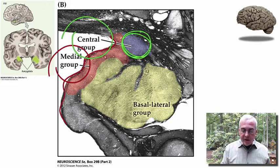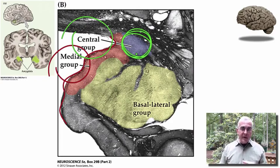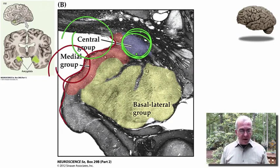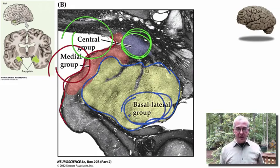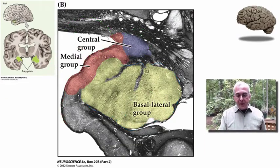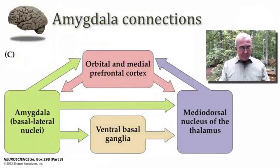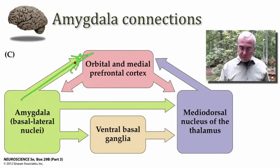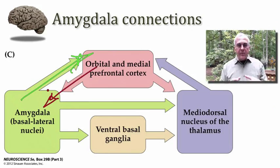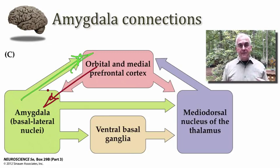The central group of nuclei is quite important in providing the output from the amygdala into the medial part of the hypothalamus. But by far the largest division of the amygdala in the human brain is the basolateral group of nuclei. For our purposes we'll just consider this collectively as the basolateral amygdala. This basolateral group maintains extensive connections with the orbital and medial part of the prefrontal cortex.